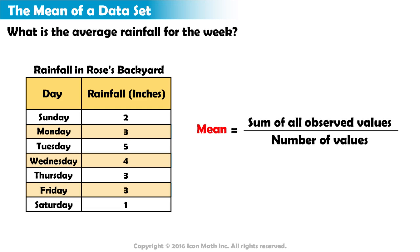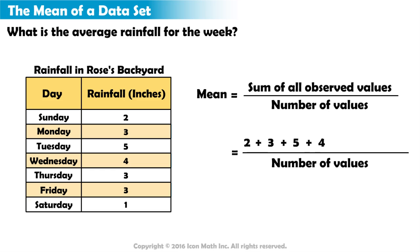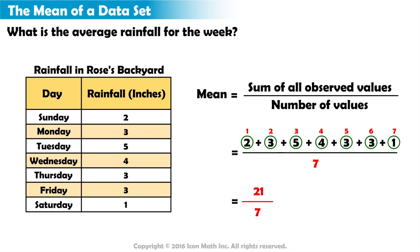To find the average or mean, we must add all of the values and then divide by the number of values. 2 plus 3 plus 5 plus 4 plus 3 plus 3 plus 1 equals 21. Since there are 7 values, we divide 21 by 7. The average or mean of the data set is 3. This means there was on average 3 inches of rain each day that week.